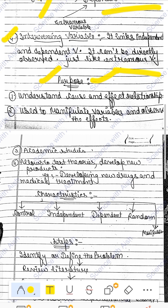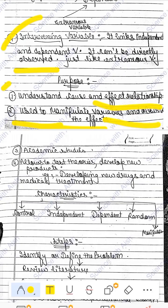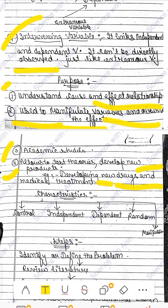The purpose of the experimental method of research is to establish the cause and effect relationship. We can manipulate variables, set variables, and observe the effect. It allows us to conduct academic studies, test theories, develop new products — for example, developing new drugs and medical treatments.